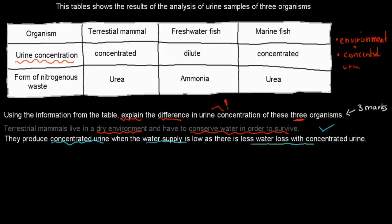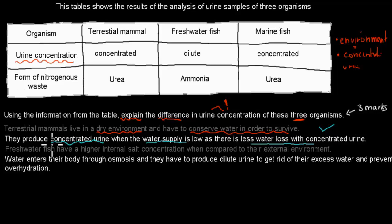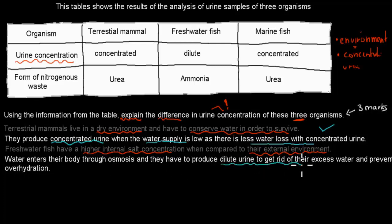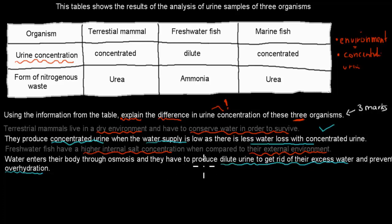For freshwater fish: they have a higher internal salt concentration compared to their external environment, since freshwater has low salt levels compared to their body. Water therefore enters the body through osmosis, and they produce dilute urine to get rid of that excess water and prevent over-hydration. Without this adaptation, water moving from low to high solute concentration would cause their bodies to swell and burst. Producing dilute urine removes that excess water. This also gets you one mark.